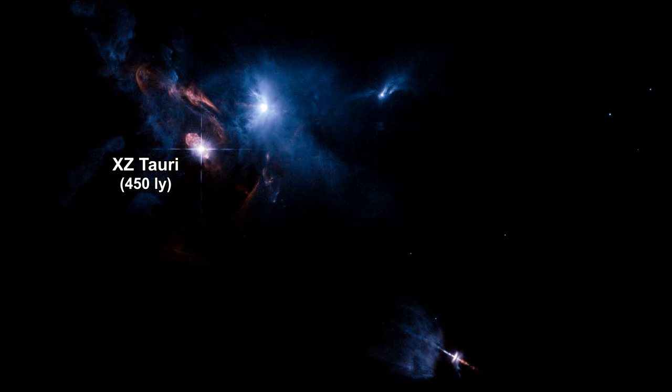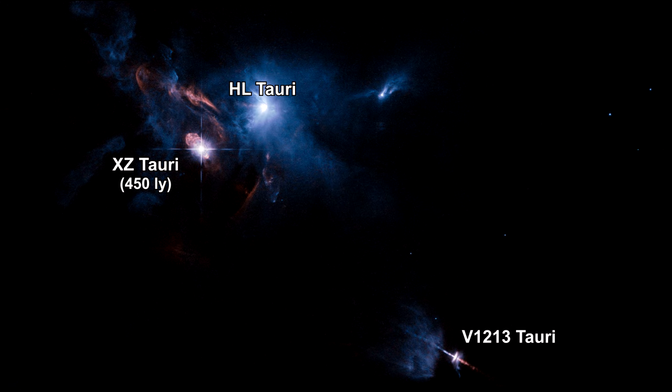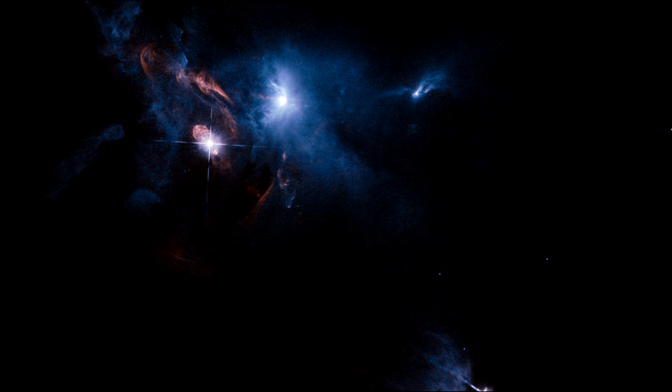Here's a view of a multiple-star system called XZ-Tauri, its neighbor HL-Tauri and V1213-Tauri, just 450 light-years away. These young stellar objects are illuminating the entire region.